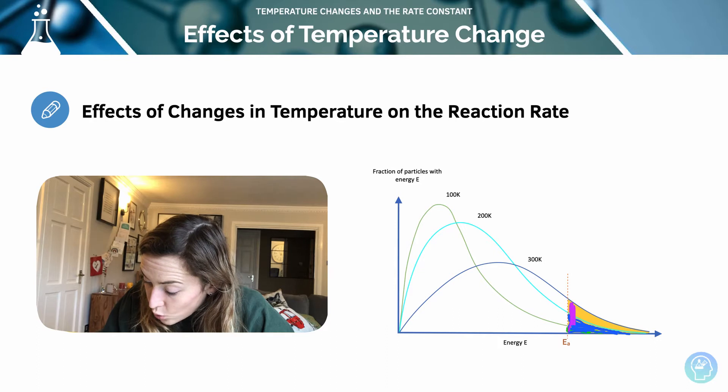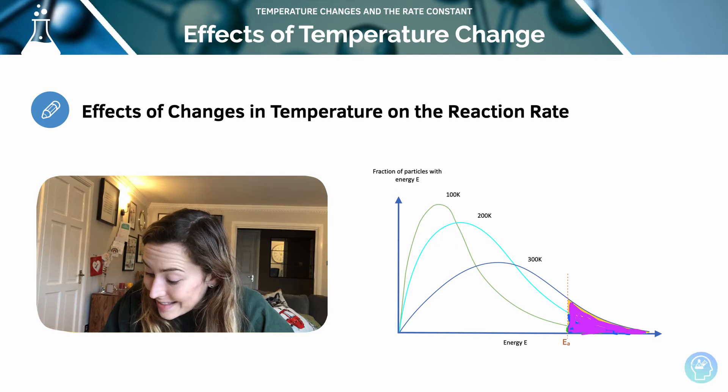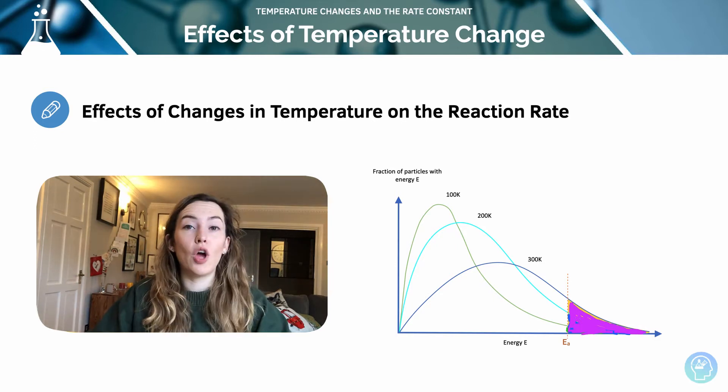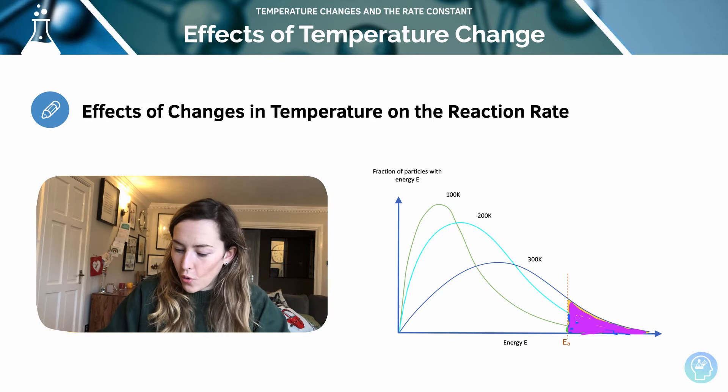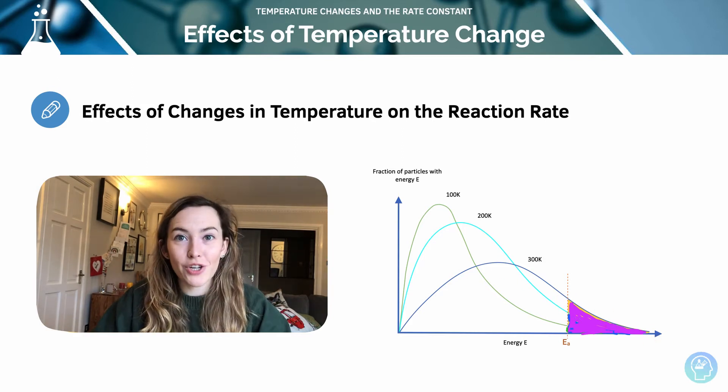we can see that I've got the most out of all three options. I have the highest number of particles that have got at least the activation energy or above, which will enable them to react. So this shows us that at the higher temperature on this curve, we're going to have a greater rate of reaction.